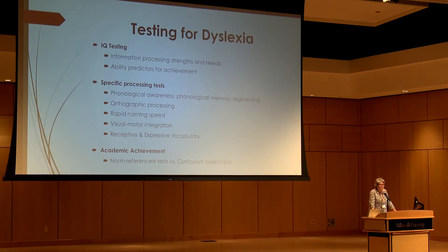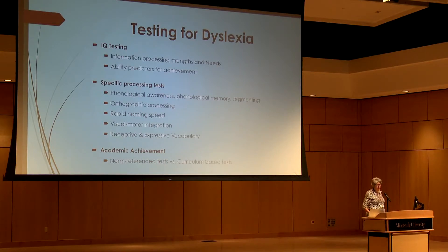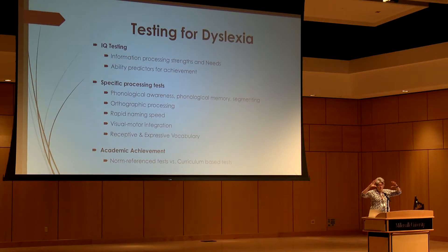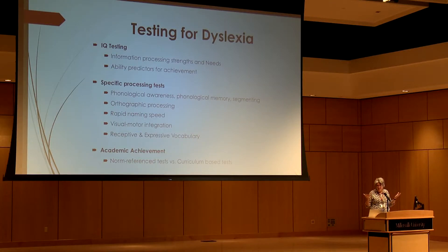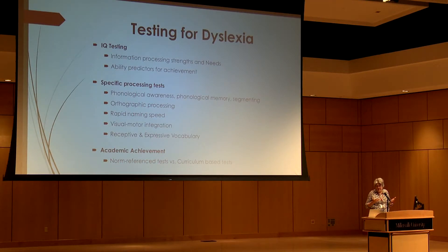When we do an evaluation for dyslexia, we do IQ testing. We do it for a couple of reasons. First, we're looking at the person's overall ability — what I call their cognitive horsepower. Some people have trouble learning because their intellectual abilities are depressed and they have problems learning everything — that's not dyslexia.